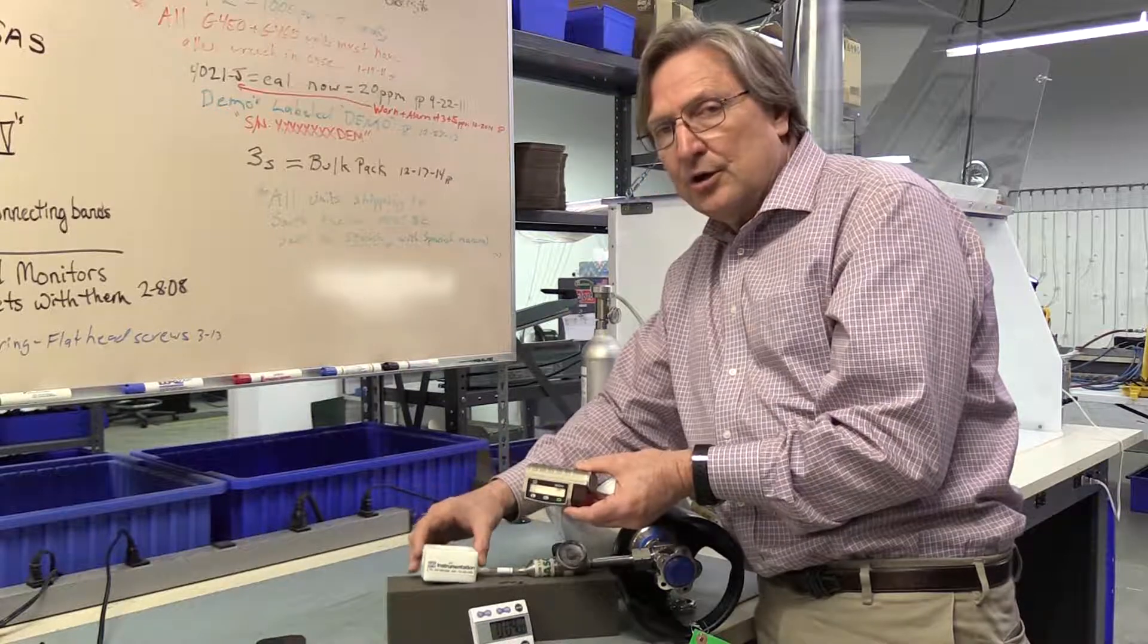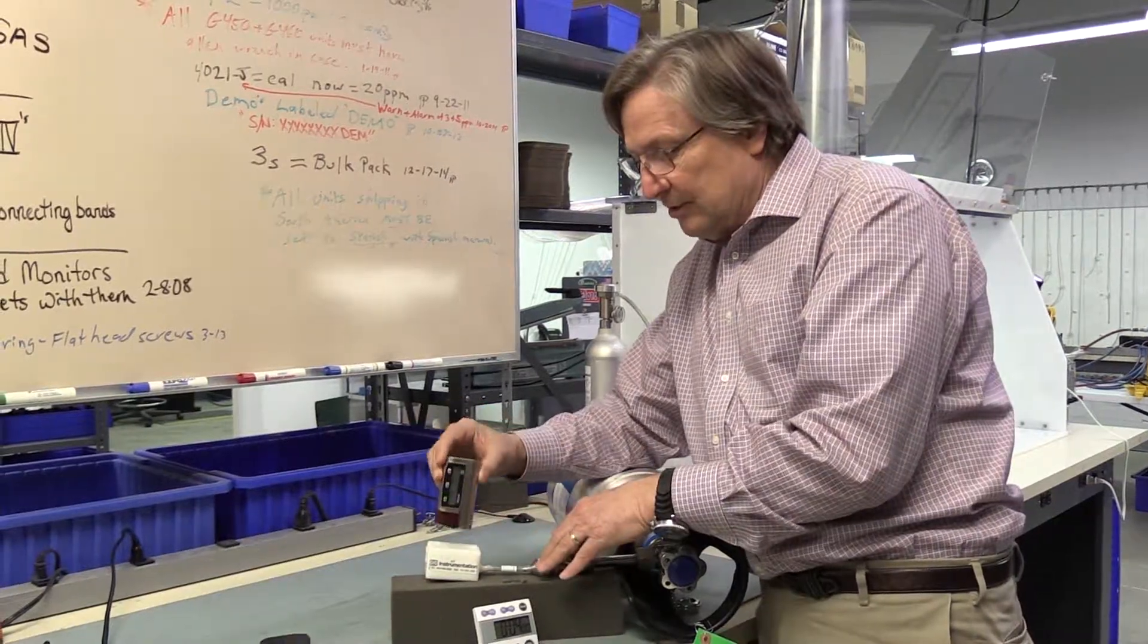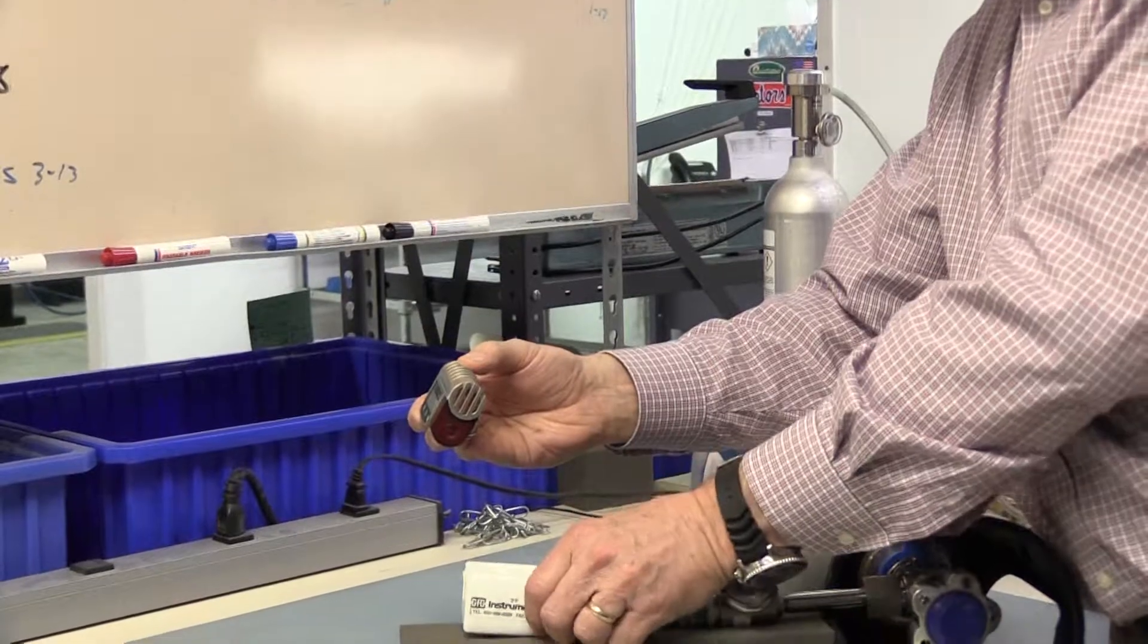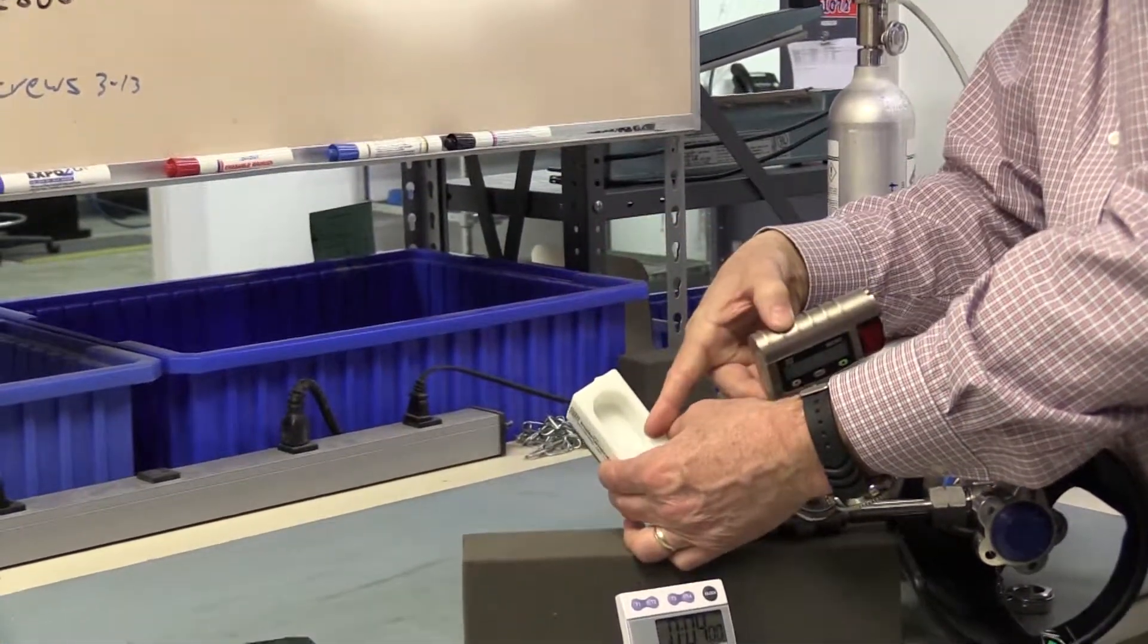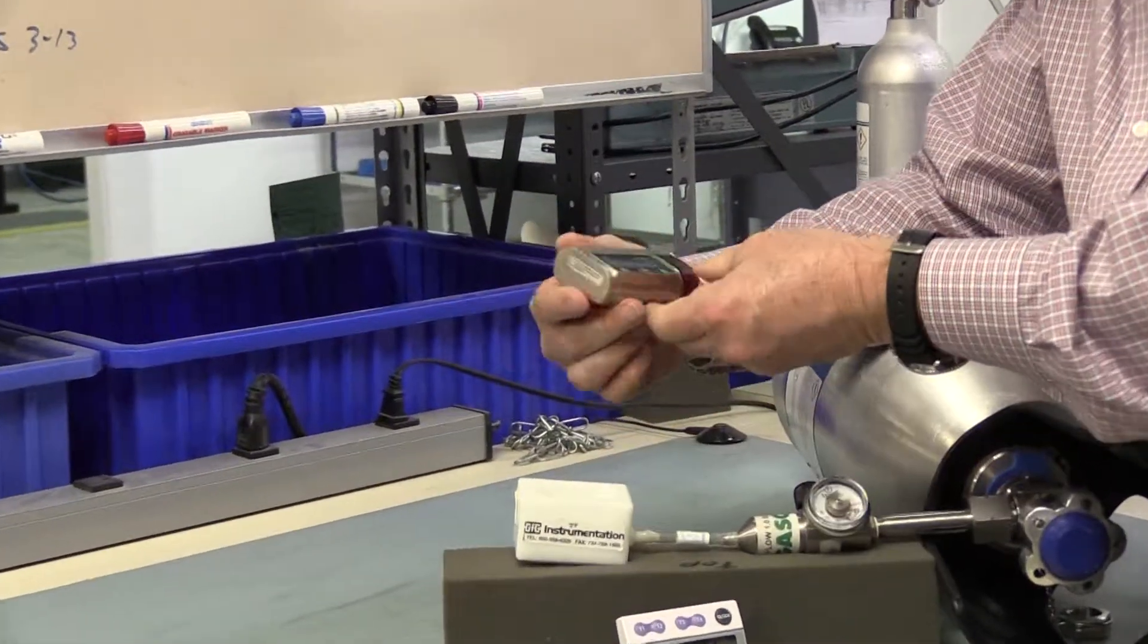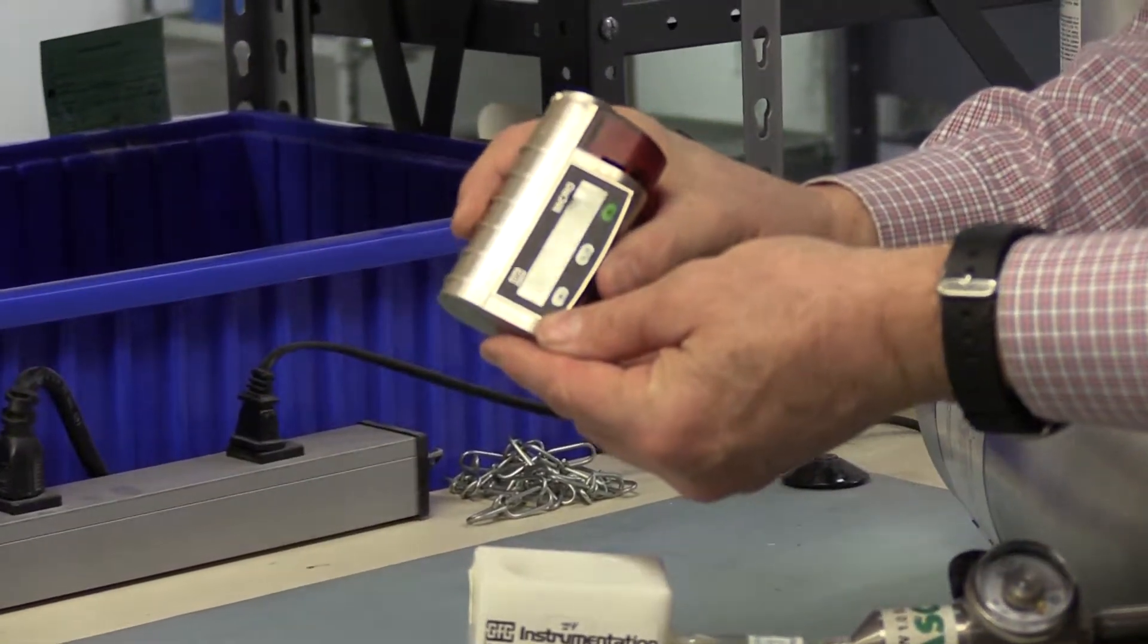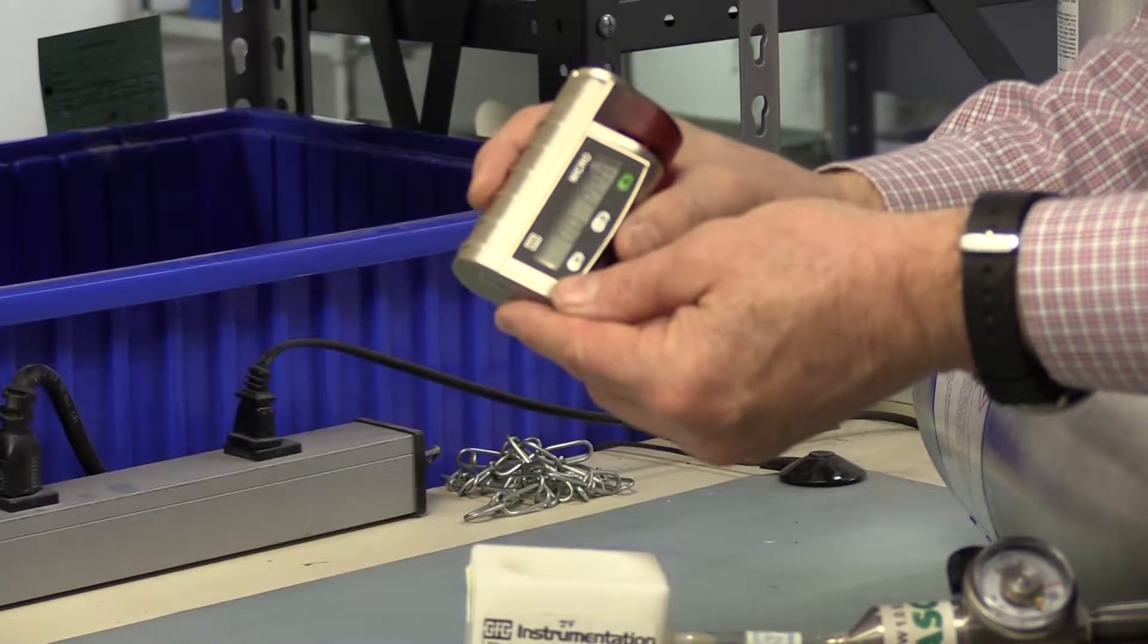The calibration adapter is made of Teflon. Make sure when we put the instrument into the adapter, that the side of the instrument where the sensor is located is lined up with the side of the Teflon adapter where the gas actually comes in. So what we're going to do is start out by making sure that the readings of the sensor in fresh air really are 0.0 parts per million.